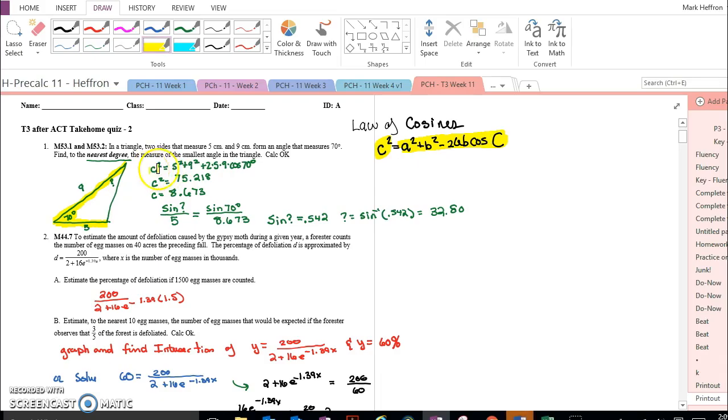So setting it up you have this, making sure to follow the order of operations which says do this multiply between cosine and 9 before anything else. C squared is this, taking the square root, c is this.